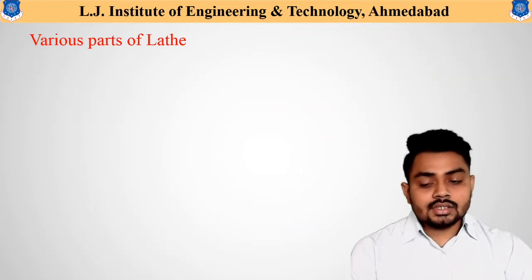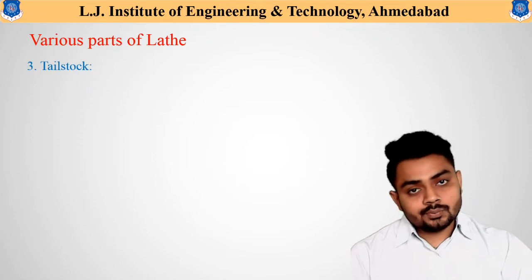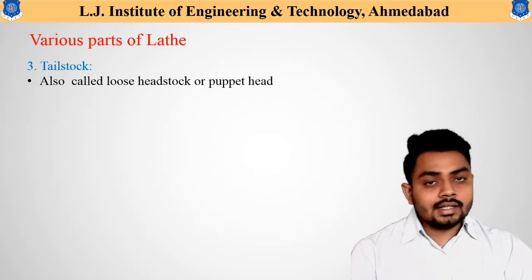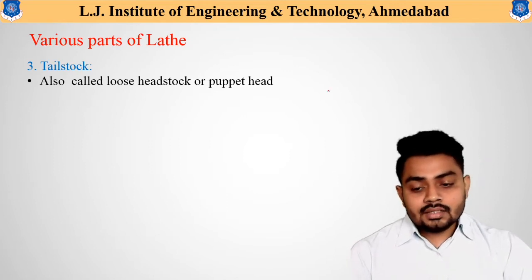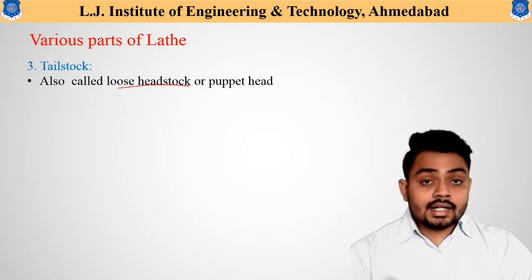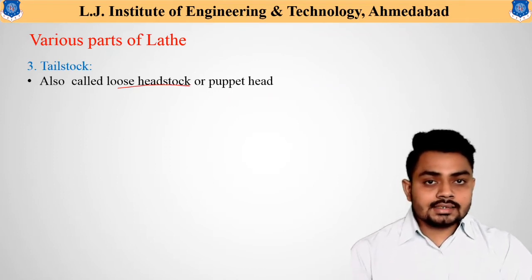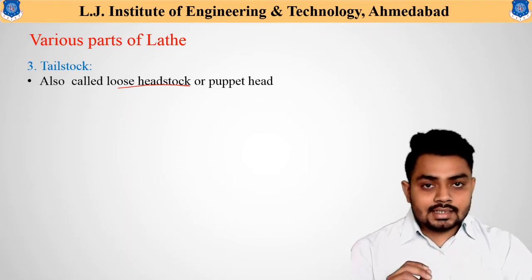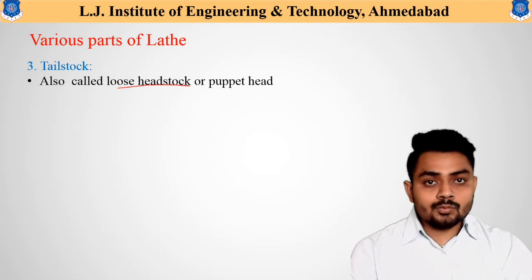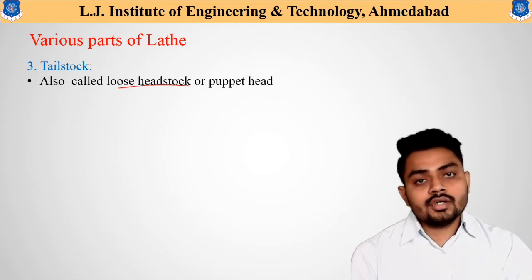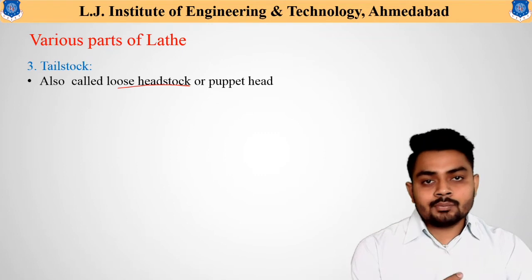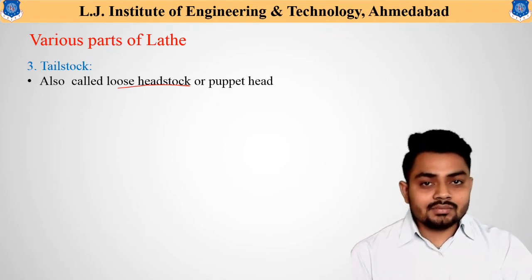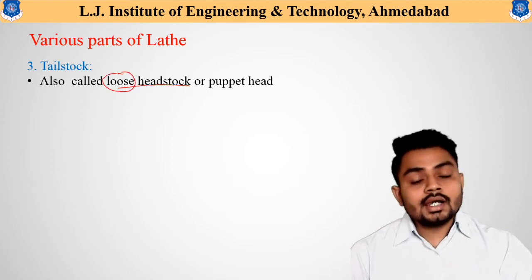The next part is the tailstock, also called the loose headstock or puppet head. It is named loose headstock because the headstock is fixed at an extreme position and cannot be moved, whereas the tailstock can be moved towards the headstock or away from it based on the length of the workpiece. It can be adjusted very easily in the lathe machine, which is why it is called the loose headstock.